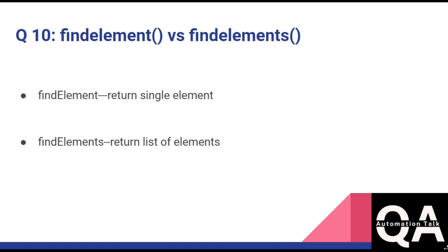The next question is: what is the difference between findElement() and findElements()? findElement() returns a single web element, while findElements() returns a list of web elements. If you have an XPath or CSS selector that matches multiple elements and you use findElement(), it will return only the first web element from that list. That is the key difference between findElement() and findElements().